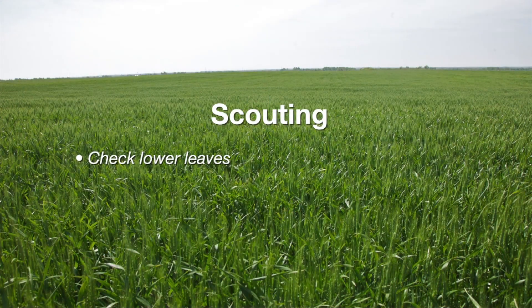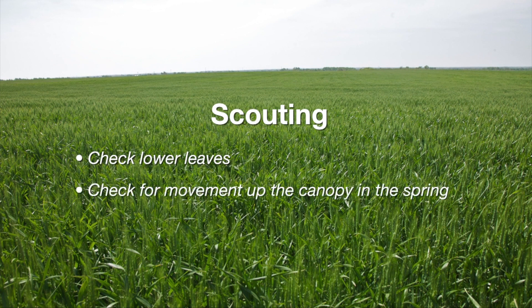And in terms of scouting, when is the best time to scout and how should I do it? They should be aware of any diseases occurring in their field. They would look at the lower leaves for the rust pustules and just know that they are there, but then in the spring, keep an eye on the pustules and see if they're moving up the canopy. Also keep their ears open for what is occurring south of us in Texas, because in the spring the inoculum blows from the southern part of Oklahoma and Texas, and is deposited here with rainy weather — and that's where our real severe infections typically come from, and that's when spraying would need to be done.